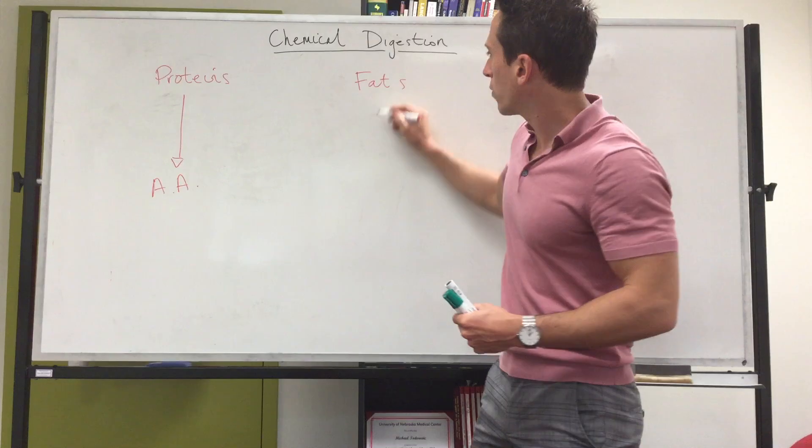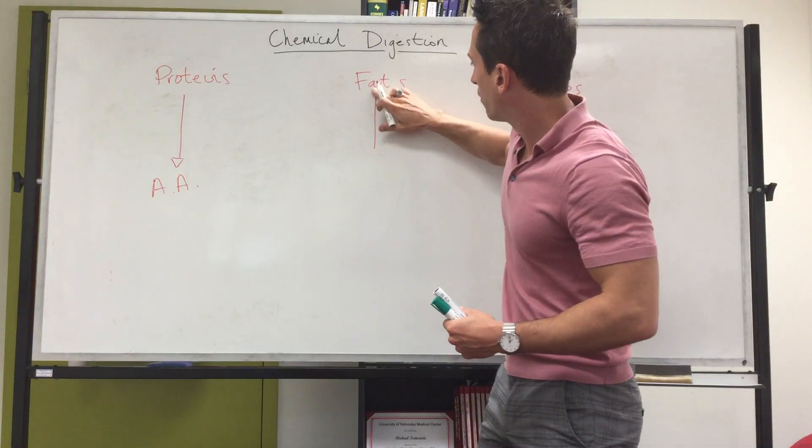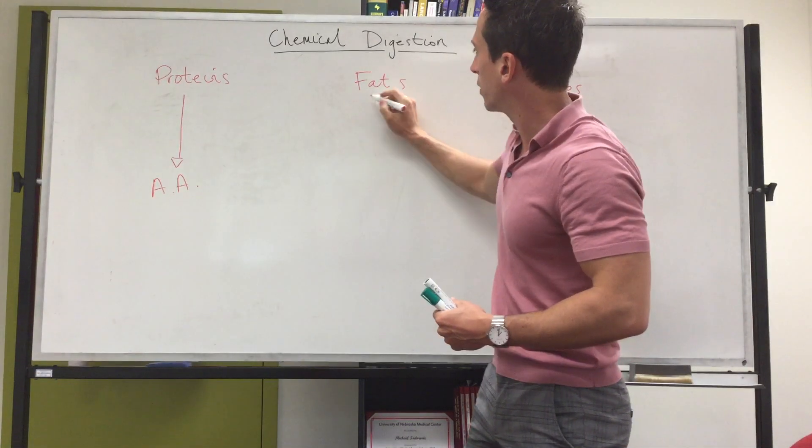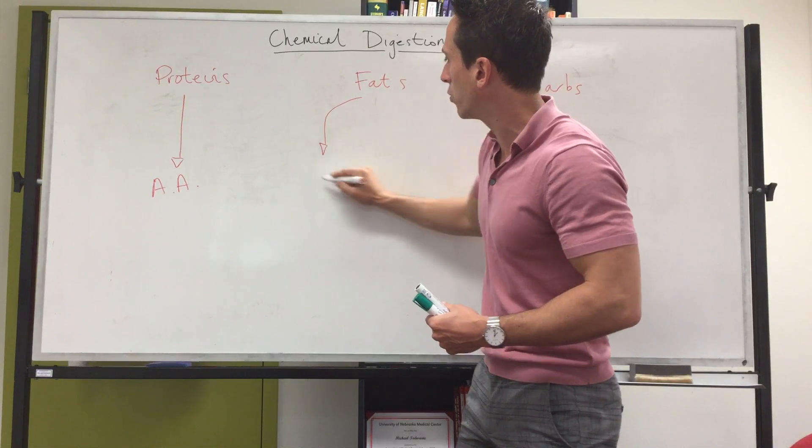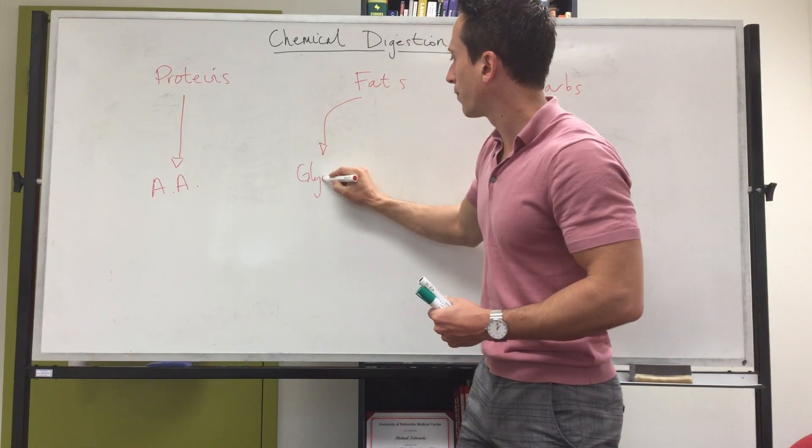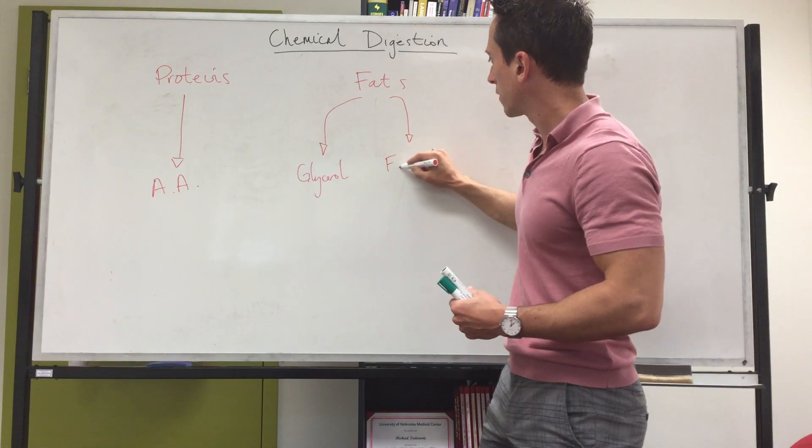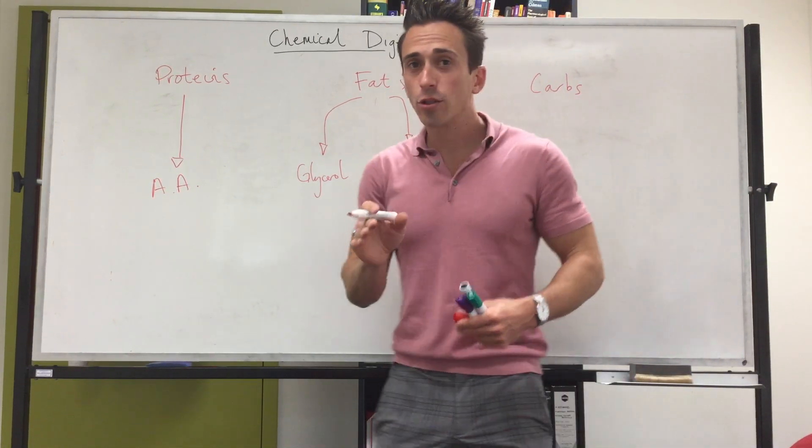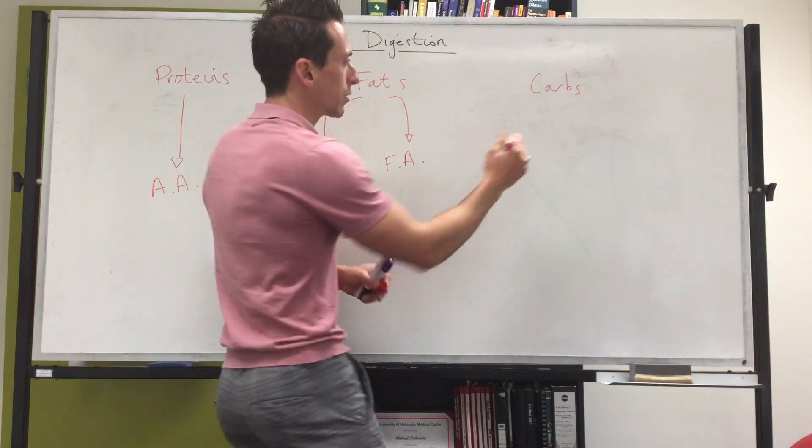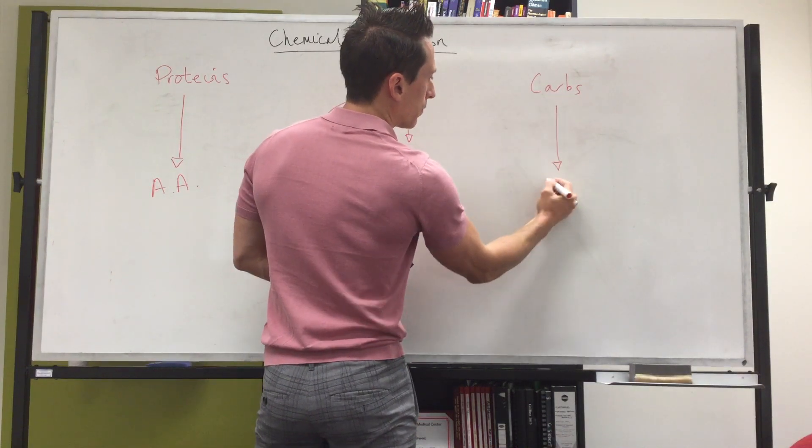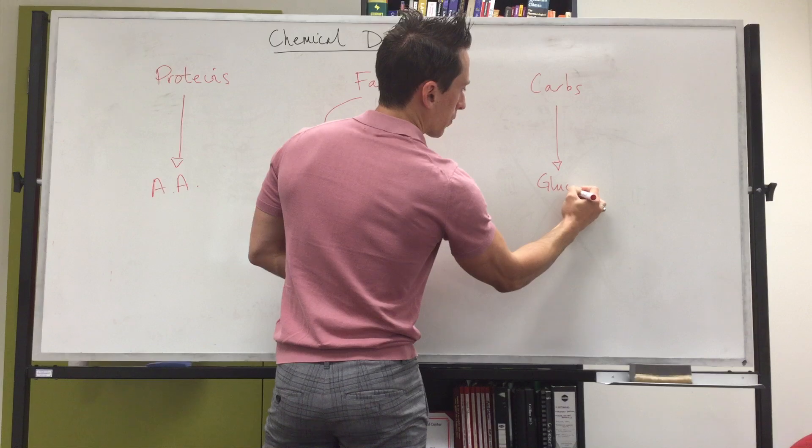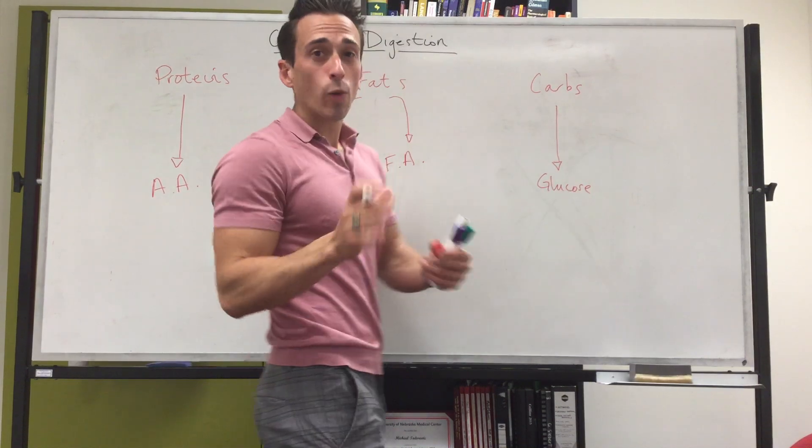Fats we want to break down into two particular components: glycerol and fatty acids. And carbohydrates we want to break down ultimately into glucose.